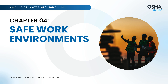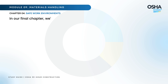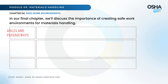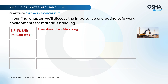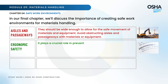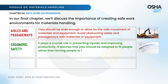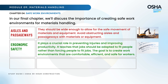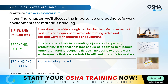In the final chapter, we'll discuss creating safe work environments for materials handling. Aisles and passageways should be wide enough to allow for the safe movement of materials and equipment — avoid obstructing them. Ergonomics plays a crucial role in preventing injuries and improving productivity. Jobs should be adapted to fit people rather than forcing people to fit jobs, creating work environments that are comfortable, efficient, and safe. Proper training and education are also essential for ensuring safe materials handling practices.